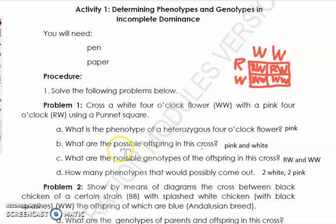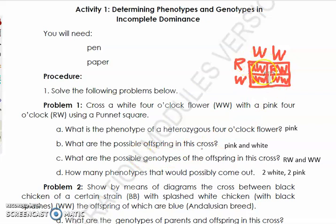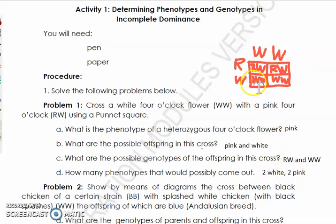What are the possible offspring of this cross? You have RW (pink) and WW (white). What are the possible genotypes? The letters inside the Punnett square: RW and WW. How many phenotypes are possible? Two out of four are RW — two pink. Two out of four are WW — two white. So the result is two pink and two white offspring.